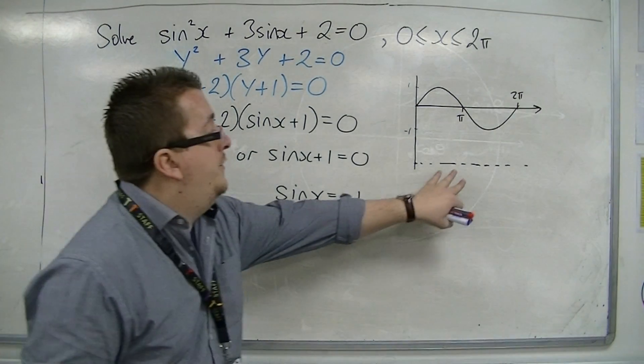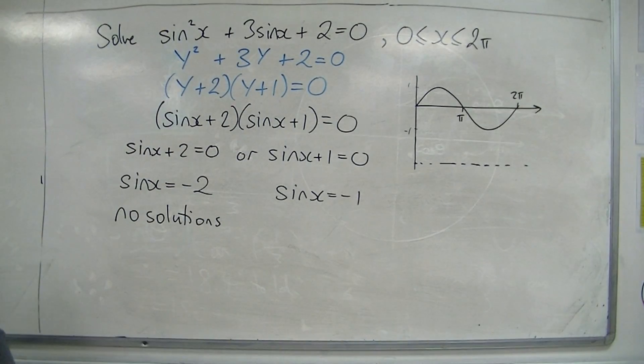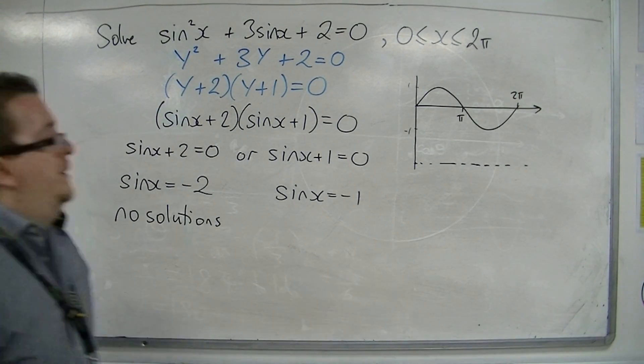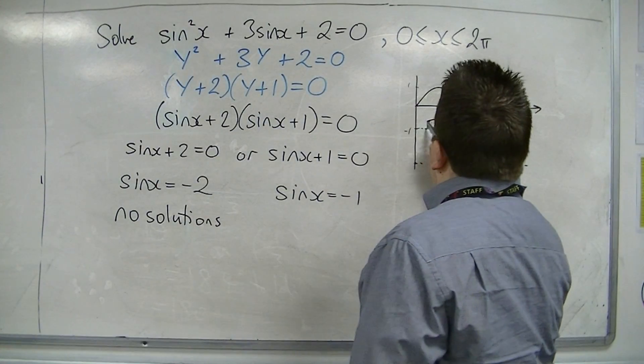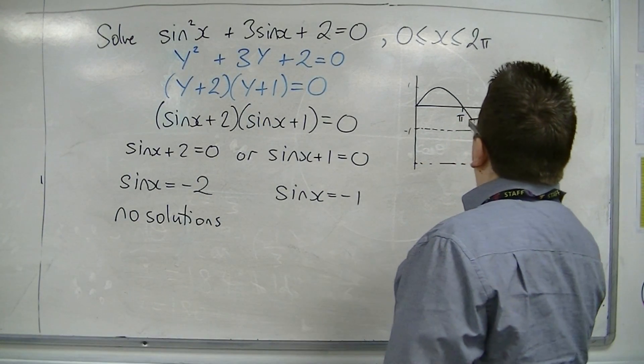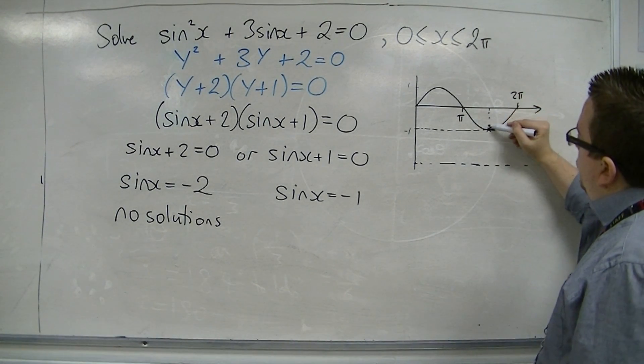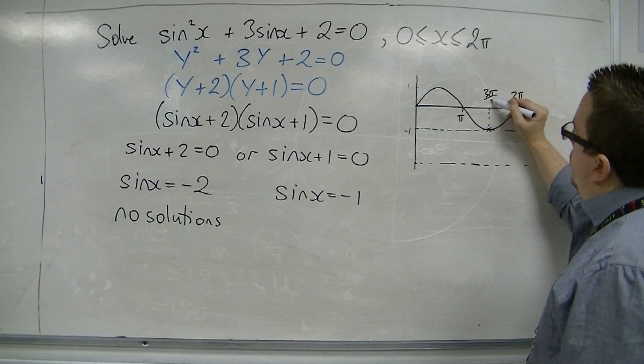And that is because minus 2 does not intersect sine x. Sin x equals minus 1, however, touches the curve at one point between 0 and 2 pi. And that is 3 pi over 2.